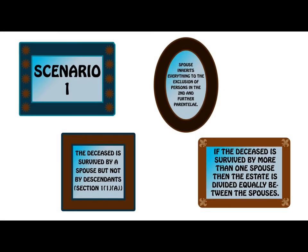In the first scenario, we look at a situation where the deceased is survived by a spouse and not by descendants. Where the deceased is survived by one spouse, the spouse inherits the entire estate. This means that even if the deceased is survived by parents or brothers and sisters, they will not inherit. Where the deceased has more than one spouse, the estate is divided equally between the spouses. For example, should the deceased have two wives, those two wives will share the estate.